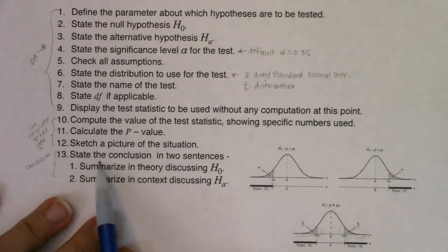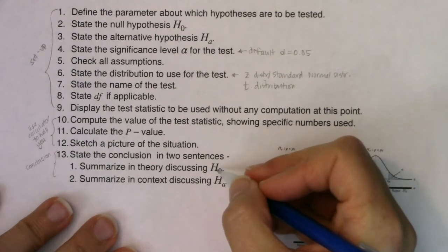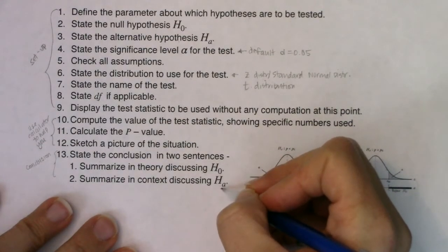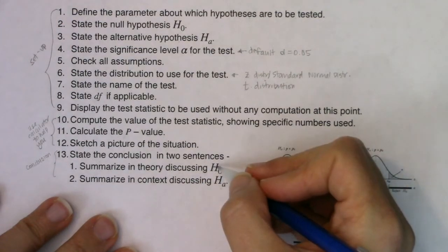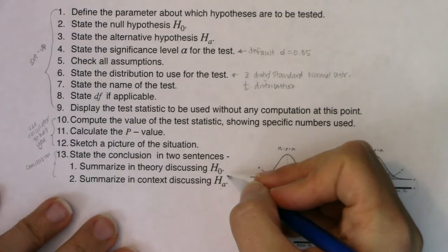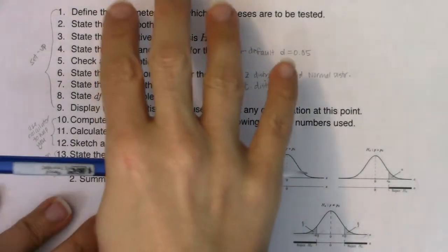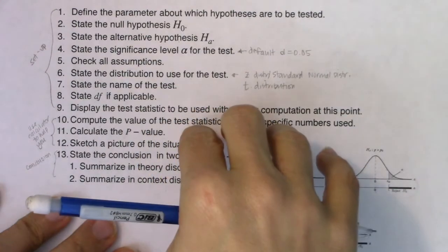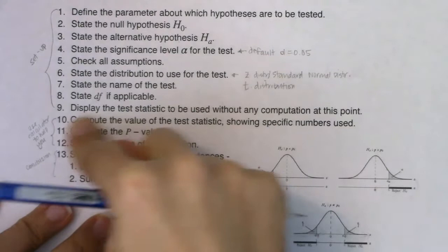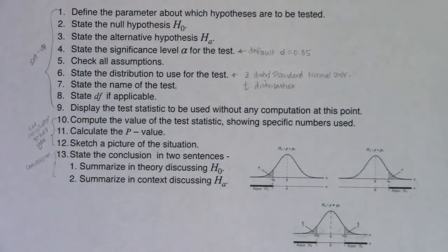Step thirteen: commit — say 'I reject the null' or 'I fail to reject the null.' That's your first sentence. Then, based on whether you reject, tell me whether or not you have evidence for the alternate, in context. If you reject, say you have sufficient evidence for the alternate. If you fail to reject, say you do not have evidence for the alternate. These are your 13 steps: first nine are setup, ten through twelve use your calculator, and thirteen states your conclusion. When we get to the next page, we'll run our first hypothesis test.